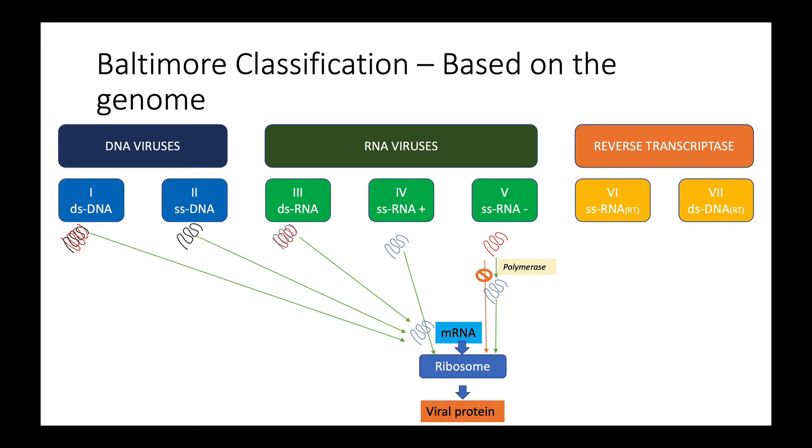Next, we come to class six and class seven which are known as the reverse transcriptase viruses. Class six is single-stranded RNA while class seven is double-stranded DNA virus. With the help of reverse transcriptase and integrase enzymes, they integrate viral genetic material into the host DNA in the host nucleus. This corrupted host DNA then encodes for messenger RNA with viral code that is read by the ribosomes to initiate synthesis of viral proteins.